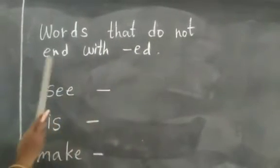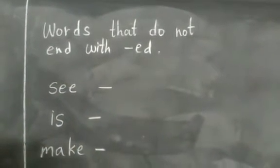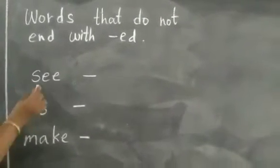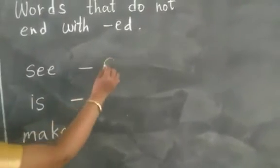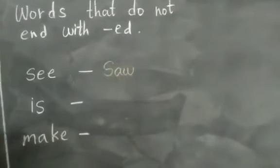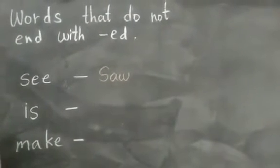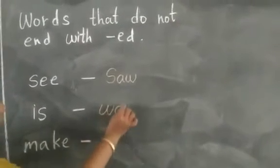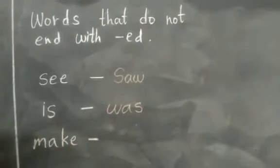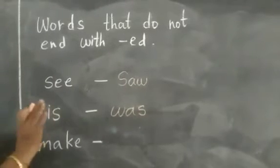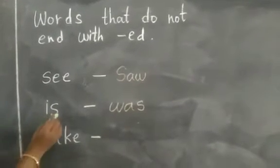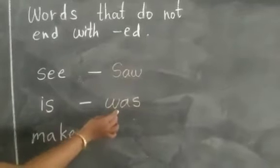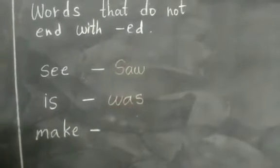Words that do not end with ED. Yes children, all words do not end with ED. Some words we have to change. For example, 'see' — in past tense we write 'saw.' I saw a movie last night. And 'is' — how we will write in past? We will write 'was,' W-A-S. Here we are not adding ED. Some words we add ED, some words we write with different spellings. He is a good boy — in present. In past we use 'was': I was at my grandmother's house.